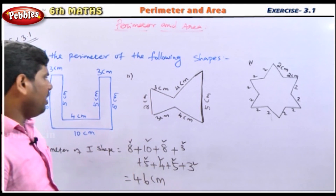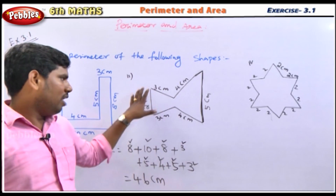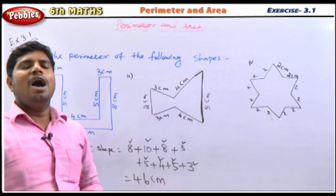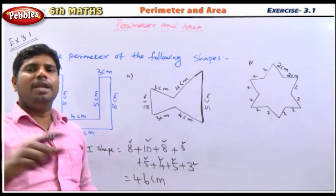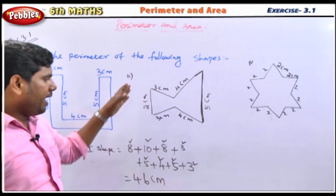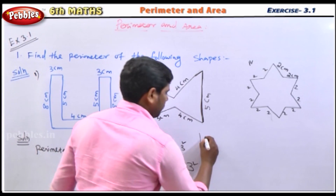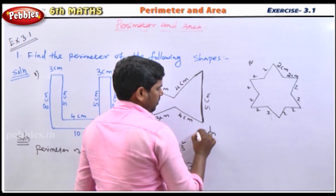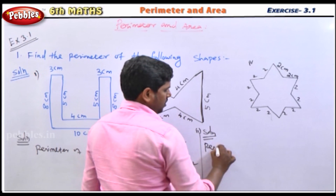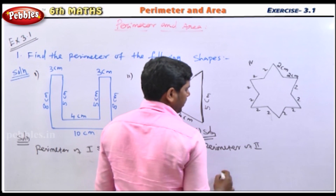To find the perimeter, you add all the measurements of the same shape. Add all the side lengths together.